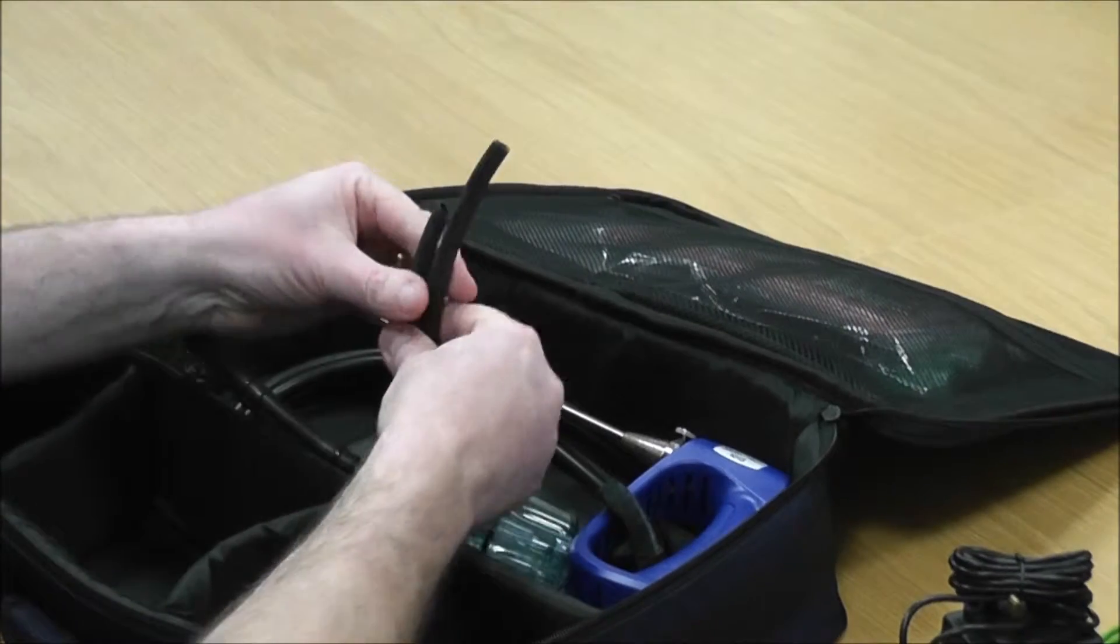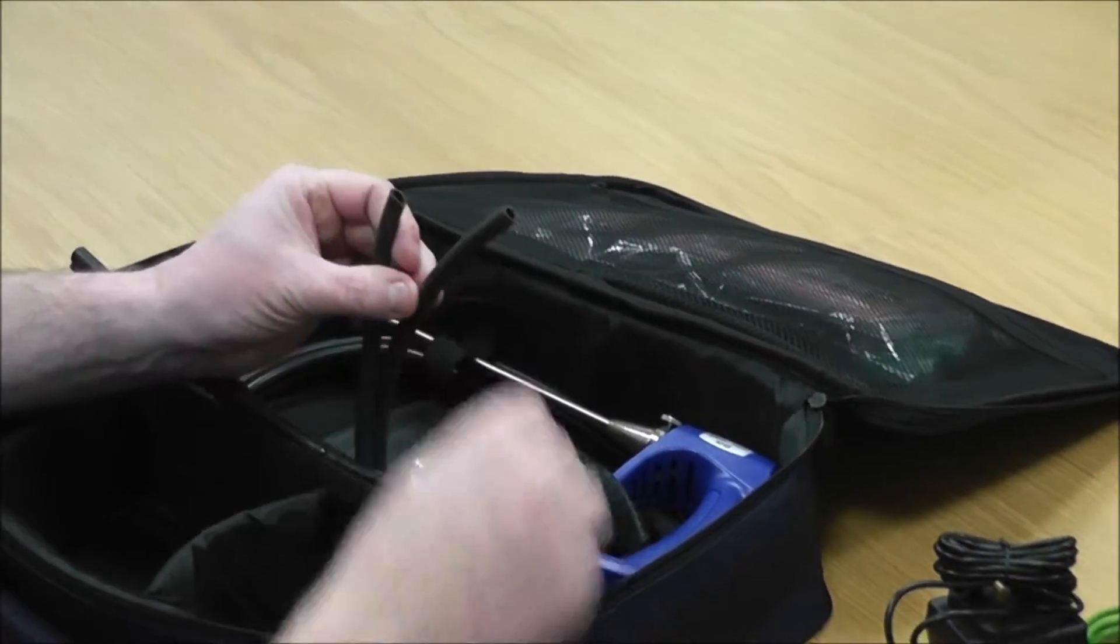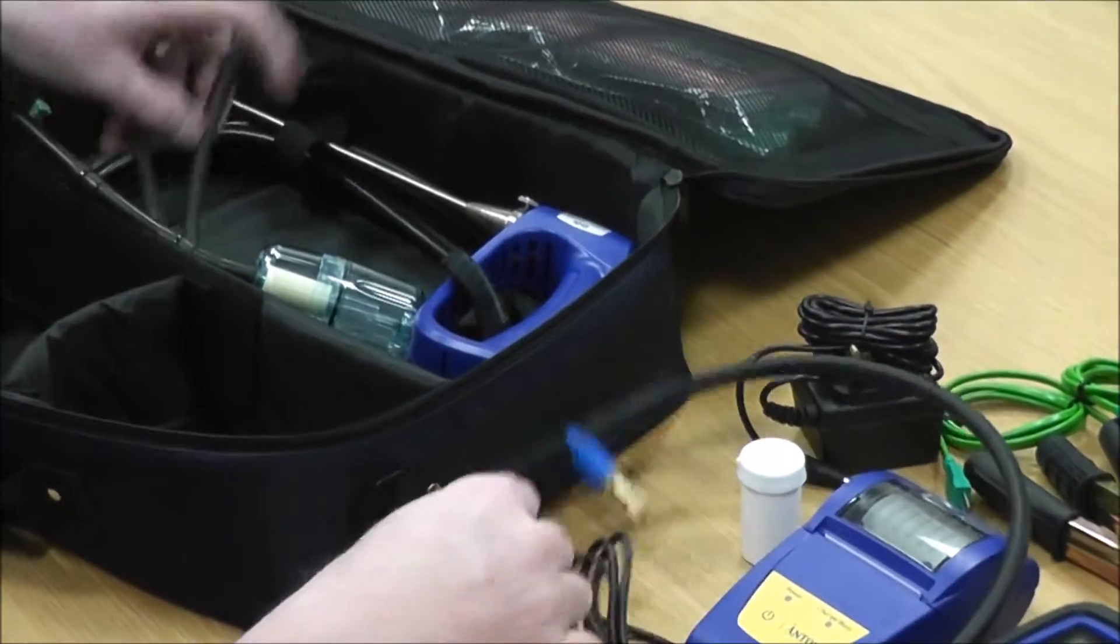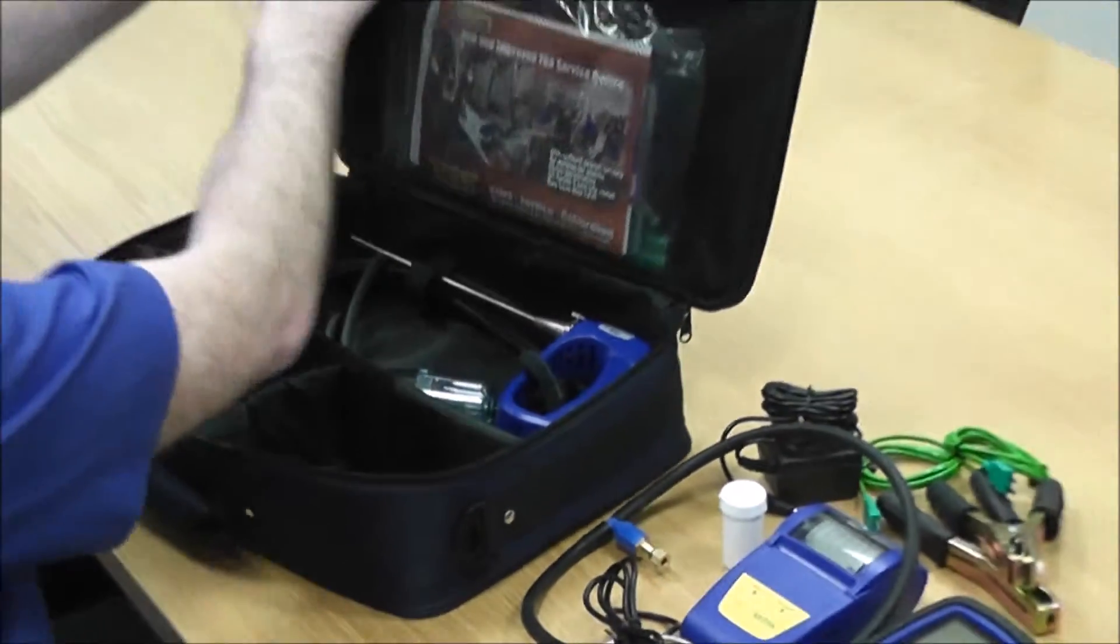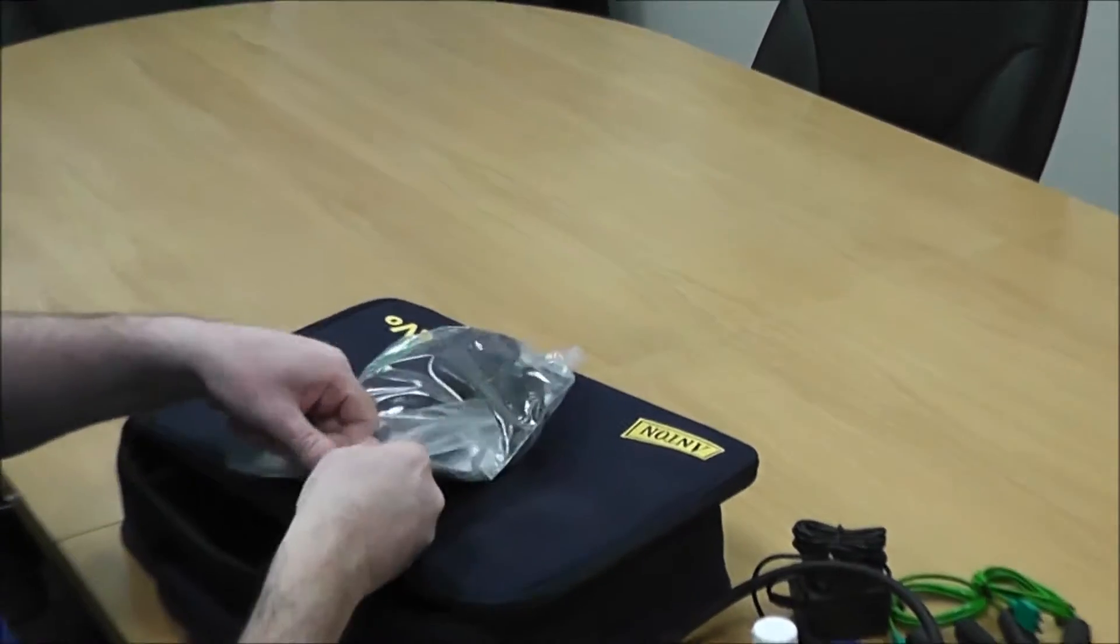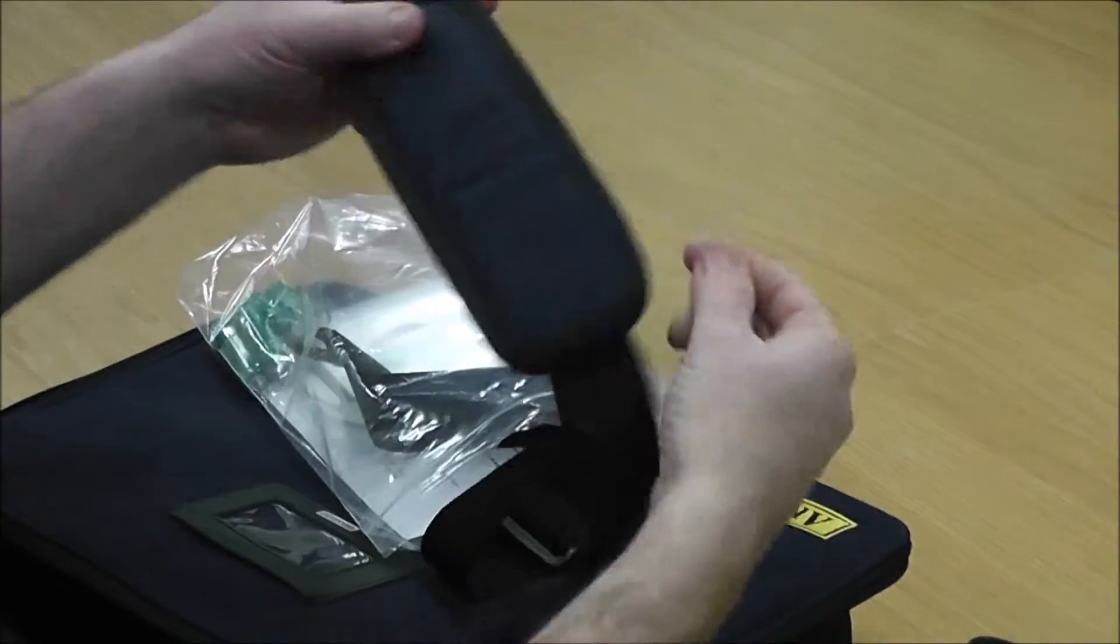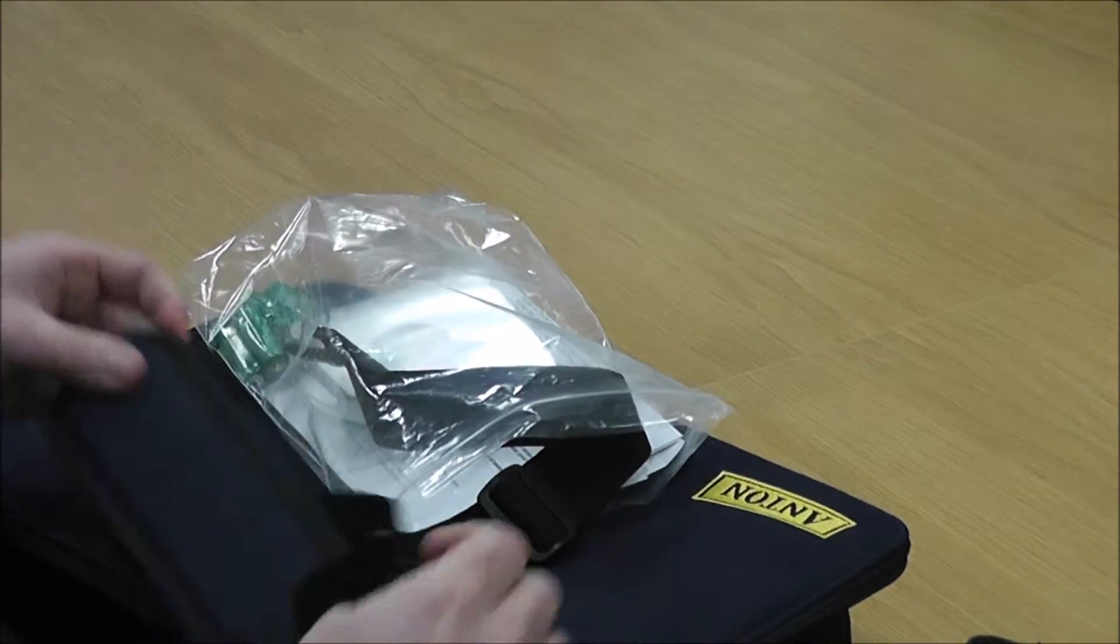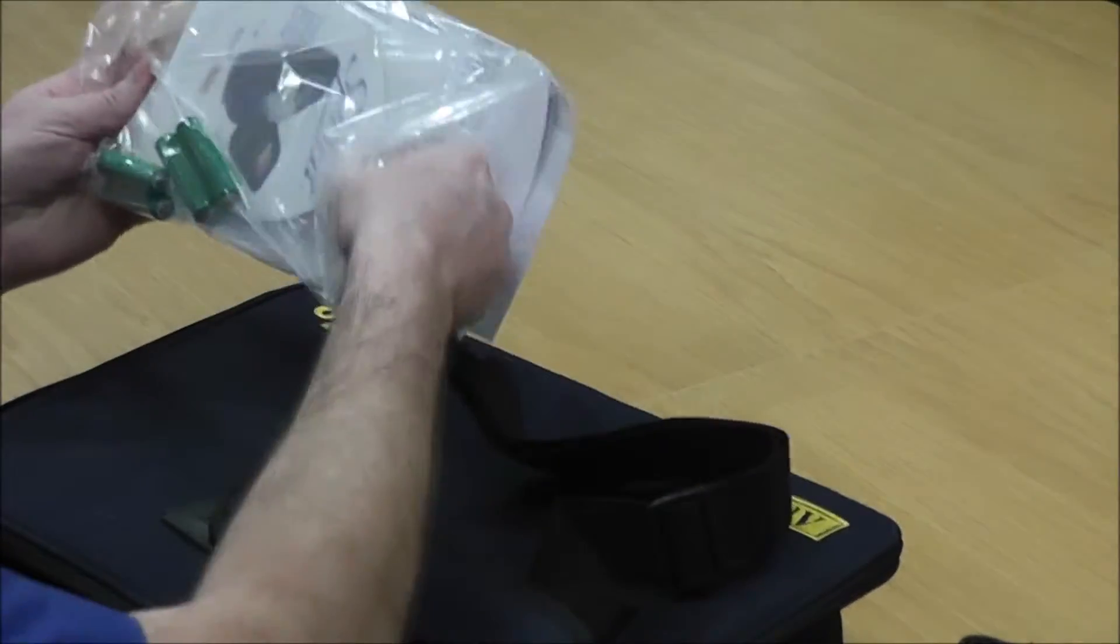You get two standard pressure hoses, and the pressure relief valve comes in the top of the bag. You also have a shoulder strap which clips on the side of the bag.